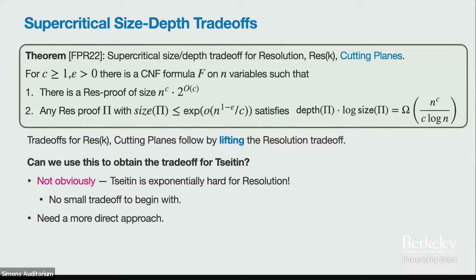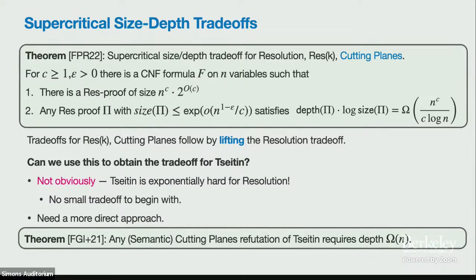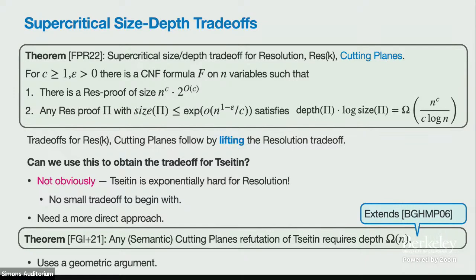It seems we need a more direct approach rather than starting with resolution and using lifting theorems. Towards this, we tried to prove lower bounds on the depth of cutting planes proofs with a nice geometric flavor, hoping it could be extended. In doing so, we proved linear depth lower bounds on Tseitin formulas even for semantic cutting planes, extending prior work by Brush-Open-High et al. — using a simple geometric argument to analyze cutting planes directly.